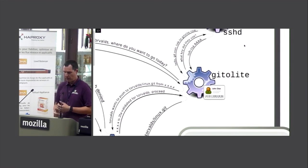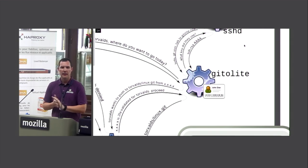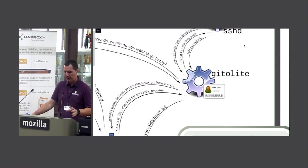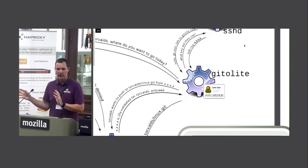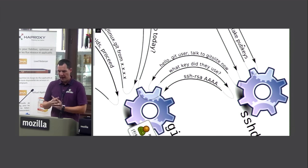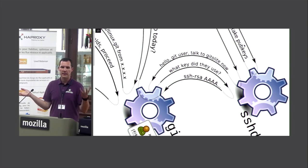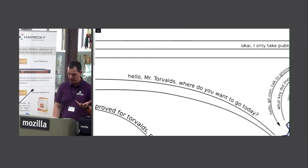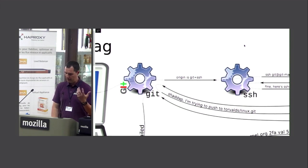What is gitolite? Gitolite is software written by Sitaram Chamarty, an Indian developer. The name comes from his attempt to write a simpler version of gitorious. It works on the basis that you connect as the same user — git, for example — and it uses the public key from the SSH session to figure out who you are and what access you have to which repositories. Gitolite says: 'What key did you use?' and identifies you as user Torvalds. Then it asks: where do you want to go? Torvalds replies that he's trying to push to torvalds/linux.git.